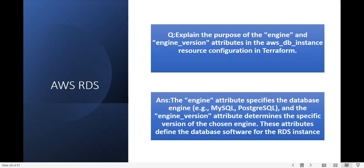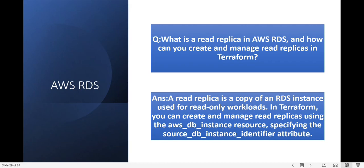Next question: what is the purpose of the engine and engine_version attributes in the AWS DB instance resource configuration in Terraform? The engine attribute specifies the database engine — for example MySQL or PostgreSQL. The engine_version attribute determines the specific version of your chosen engine. Together these attributes define the database software for your RDS instance.